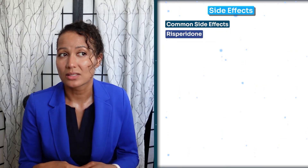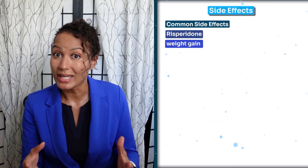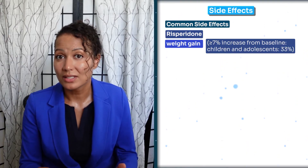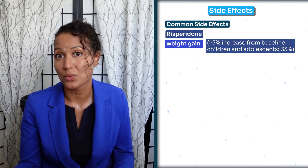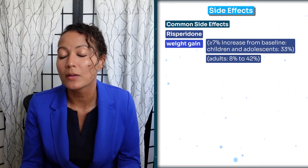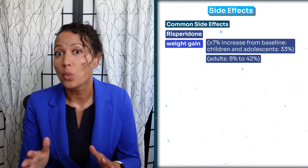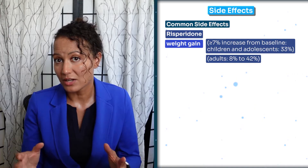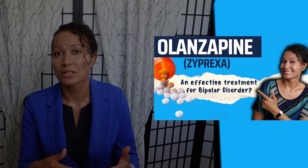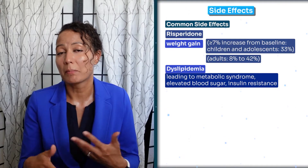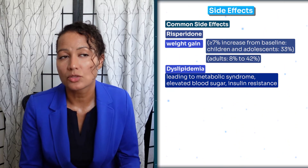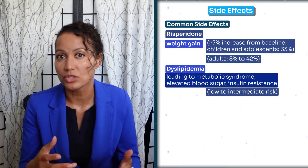Another common side effect with atypical antipsychotics is weight gain — a greater than 7% increase in weight is seen in 33% of children and adolescents, and in 8 to 42% of adults, so it doesn't affect everybody the same way. It can increase appetite, and the dyslipidemia that can lead to metabolic syndrome — as discussed in the olanzapine video — can cause elevated blood sugar and insulin resistance. The risk for dyslipidemia or metabolic syndrome is considered low to intermediate depending on the research.